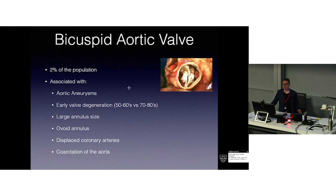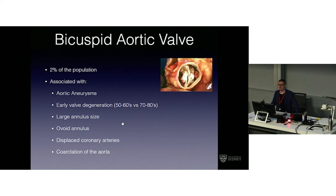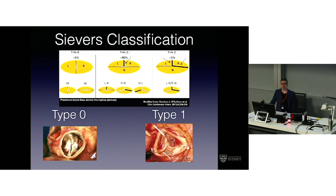Bicuspid aortic valves occur in about 2% of the population. They have associations with aortic aneurysms and early valve deterioration because the leaflets do not behave normally — increased mechanical forces lead to early calcification. They have a larger, more ovoid annulus. Coronary arteries can be lower and more displaced toward the commissure, which can be a problem during replacement, and there is an association with coarctation of the aorta. The SEVIS classification categorizes bicuspid aortic valves into type 0, type 1, and type 2, depending on whether they have a fused commissure and fused raphe. Type 0 — the true bicuspid — has symmetrical leaflets with coronaries usually diametrically opposed, but represents only 5% of all bicuspids.